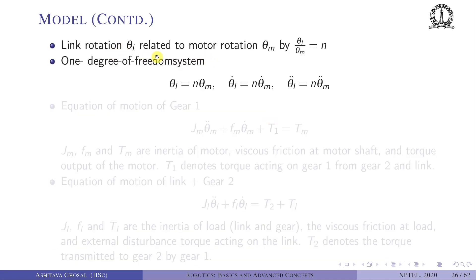The link rotation θL is related to motor rotation θM by θL = N·θM, where N is the gear ratio and N is much less than 1. This is a one degree of freedom system, so θL-dot = N·θM-dot and θL-double-dot = N·θM-double-dot. There is only one independent variable, and for the rest of this lecture we take θM as the independent variable.